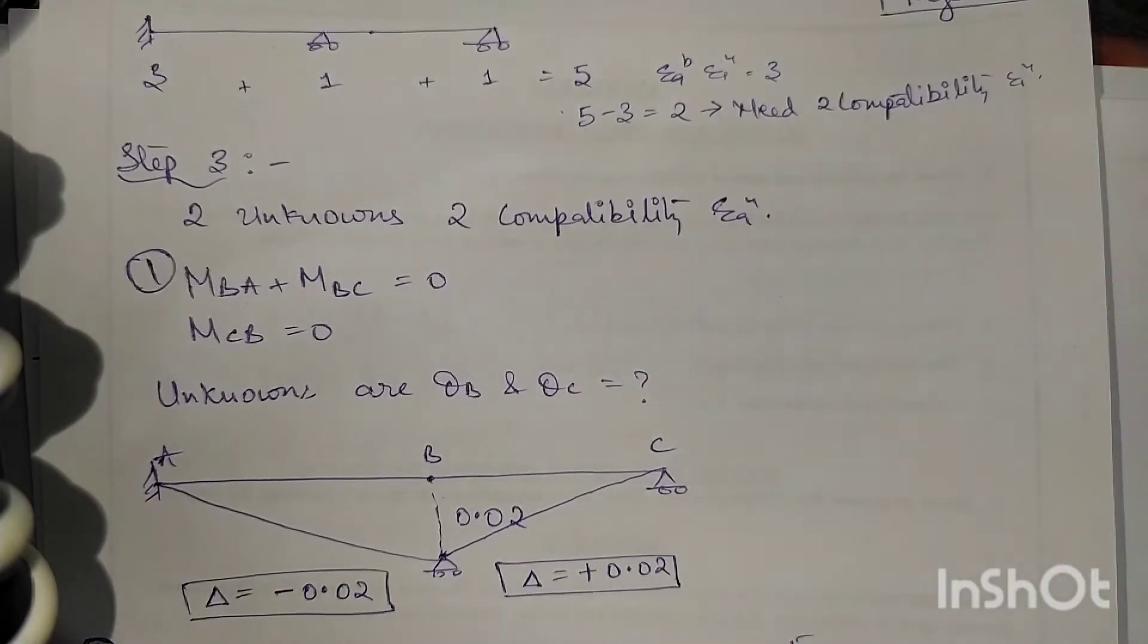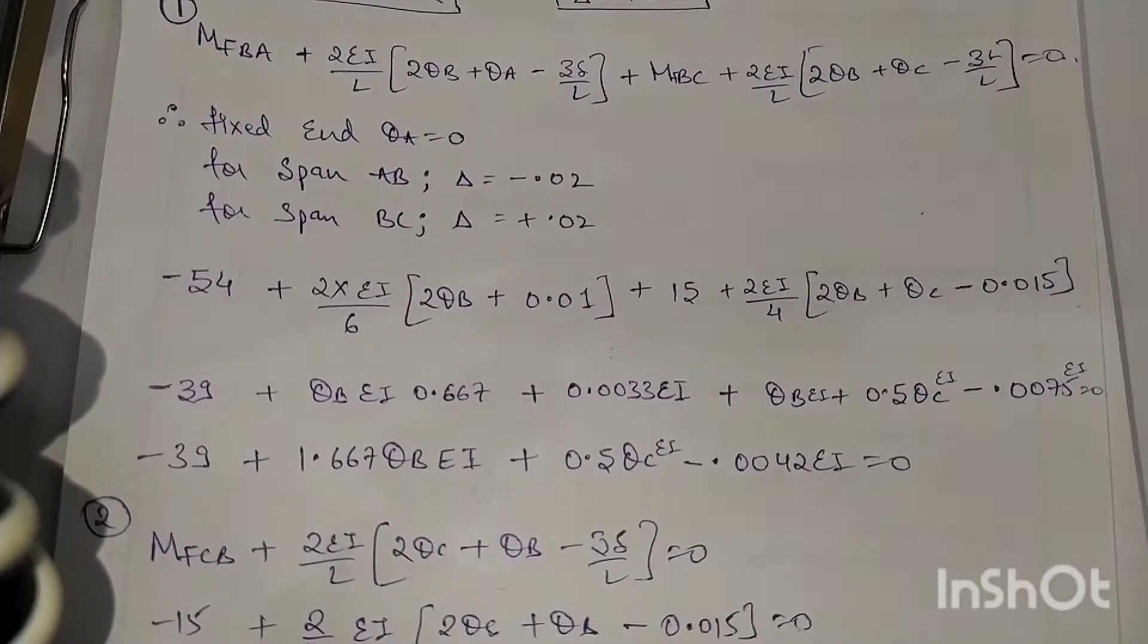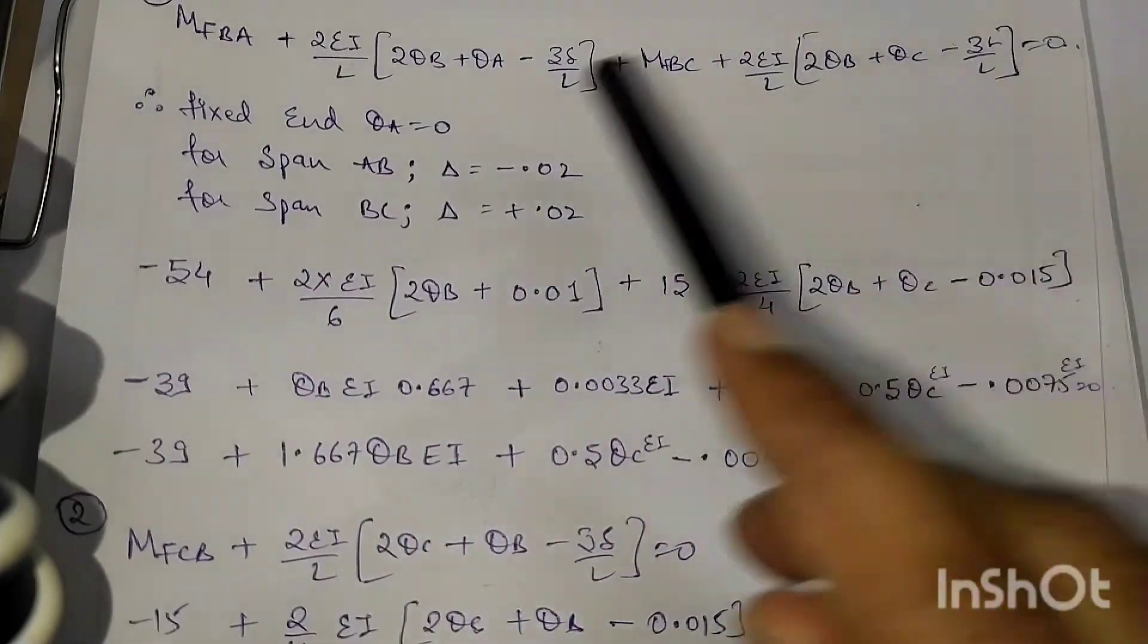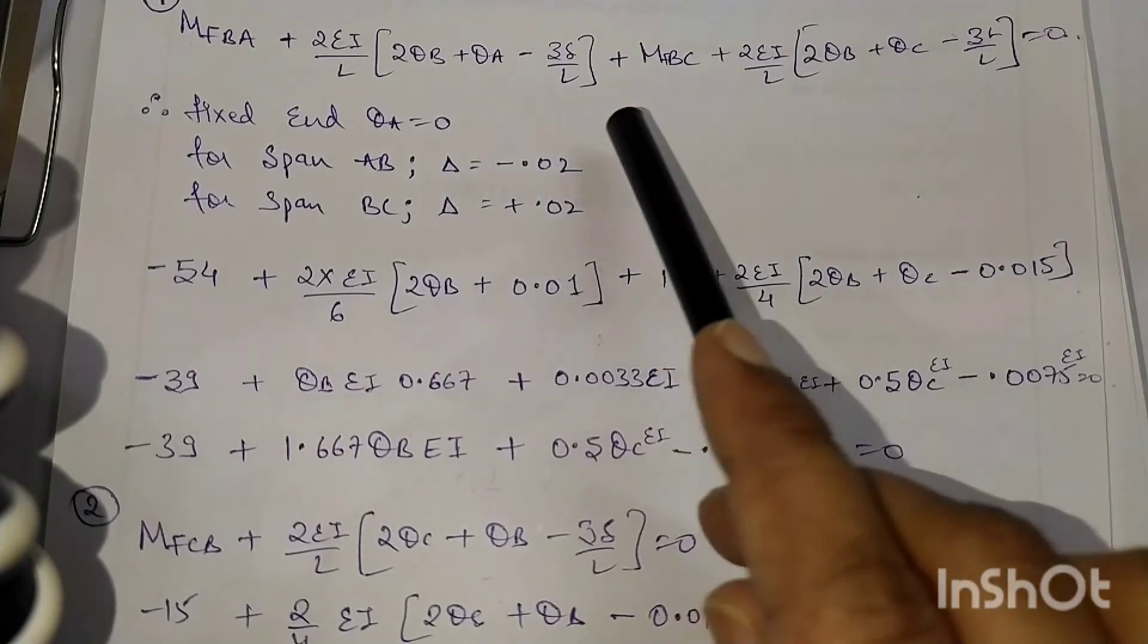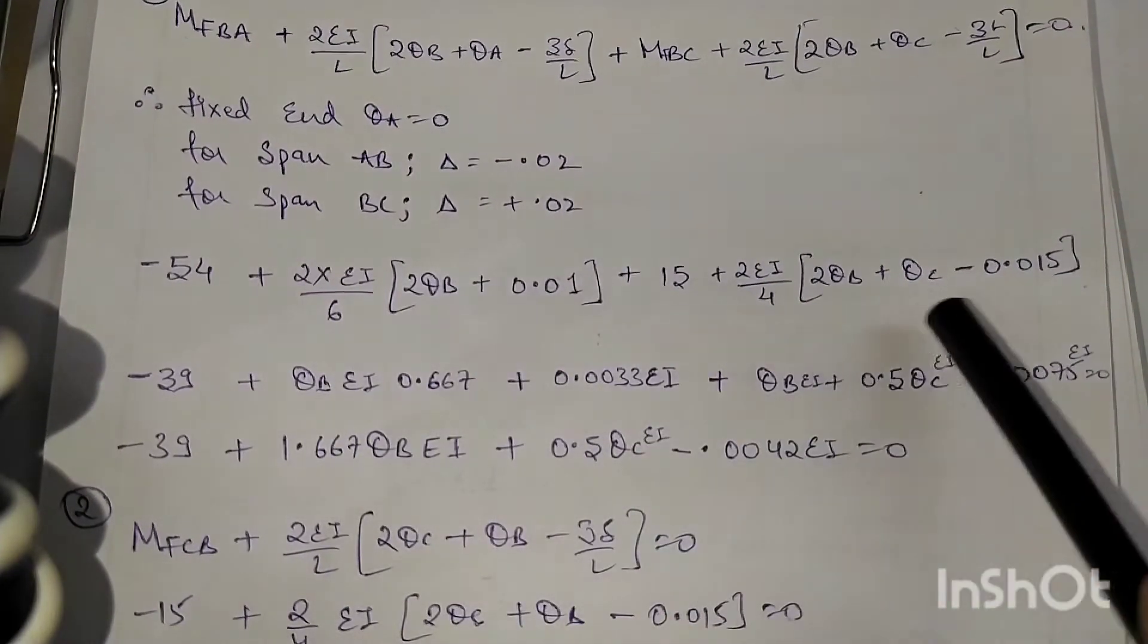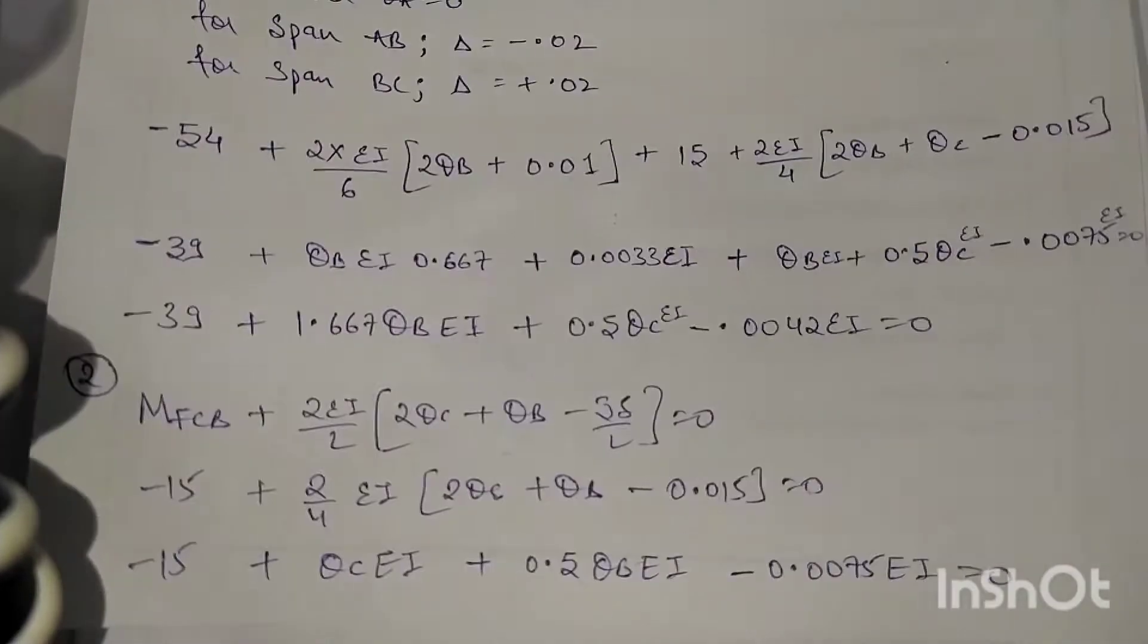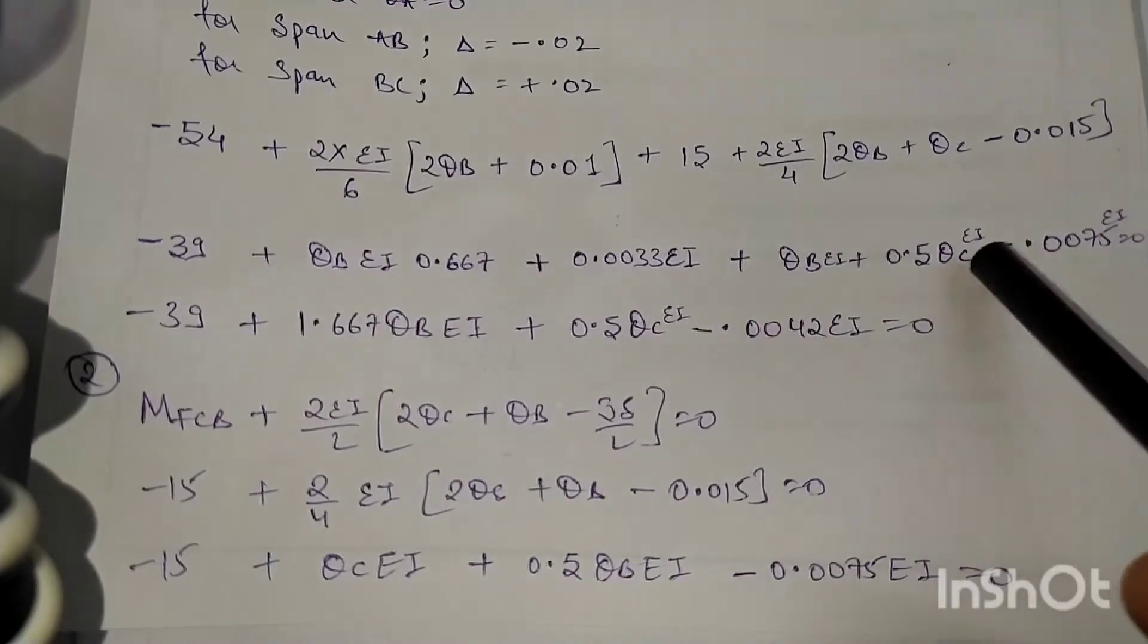Next we are substituting the value of MBA plus MBC is equal to zero. We have kept theta A equal to zero because it is a fixed end. We have kept delta values for span AB and BC.